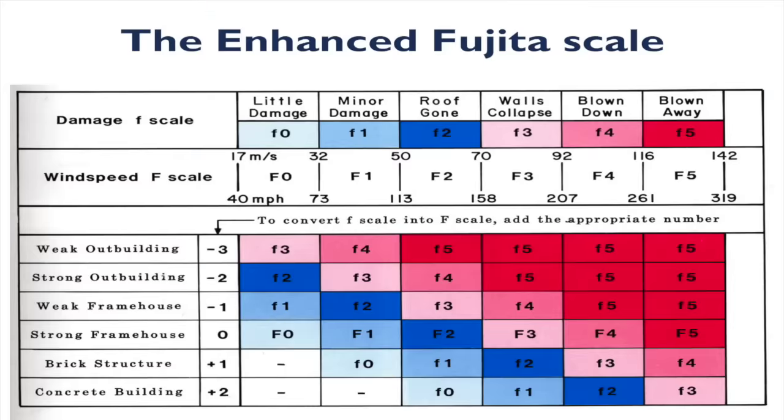This enhanced Fujita scale goes from an EF0, EF1, EF2, EF3, EF4, and EF5. Those are the most severe tornadoes. We'll talk more detail about those very severe tornadoes in the EF4, EF5. Some people say F in these particular examples as well. You'll hear me use those interchangeably.